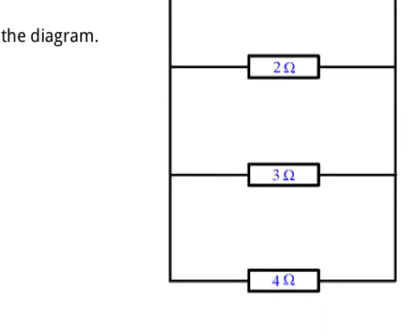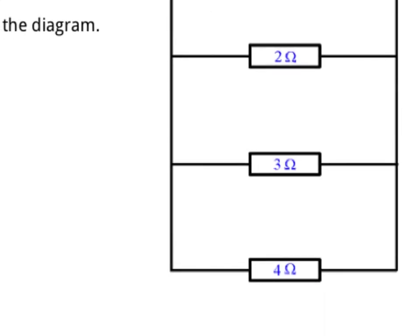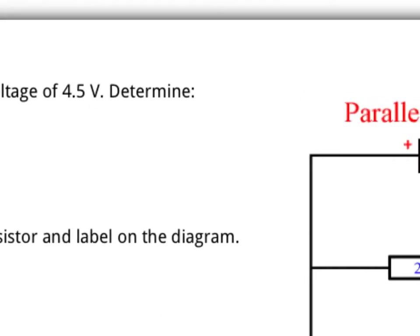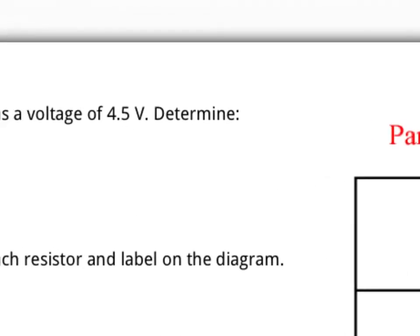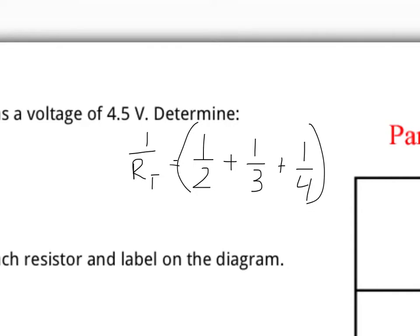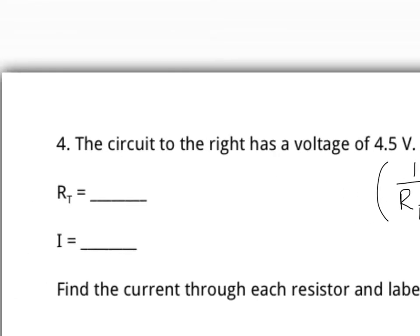For number four, we label the source voltage as 4.5 volts. We're asked to find the total resistance with three resistors — 2, 3, and 4 ohms — in parallel. The equation for total resistance in parallel is: 1 over RT equals 1 over R1 plus 1 over R2 plus 1 over R3, so 1 over 2 plus 1 over 3 plus 1 over 4. We add these fractions together and then take the inverse of both sides, giving a total resistance of 0.92 ohms.